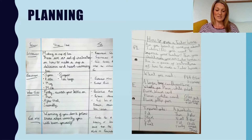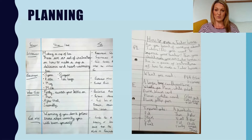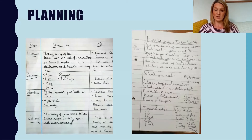You should have planned your instructions, and on the screen you can see two examples of planning that I've been sent today. We have a set of planning for making a cup of tea, which is really clear — you can see they've thought about the tips I've given them, thinking about what they're going to include in each section. Then we've got another one for how to make a Tudor house, which is fantastic — something you've all done, a really nice idea for instructions.